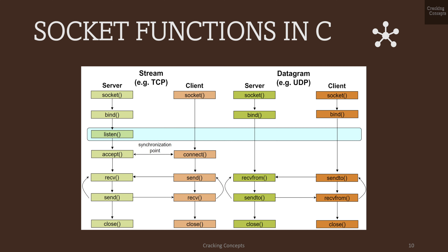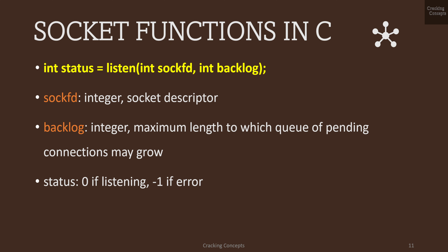The next function is listen, which has two arguments: socfd and backlog. listen marks the socket referred to by socfd as a passive socket — one that will be used to accept incoming connection requests. The backlog argument defines the maximum length to which the queue of pending connections can grow. On successful execution it returns 0, else minus 1.